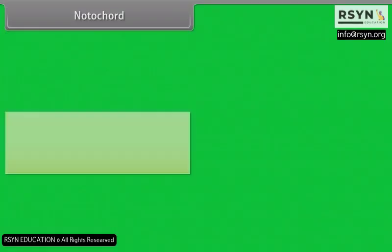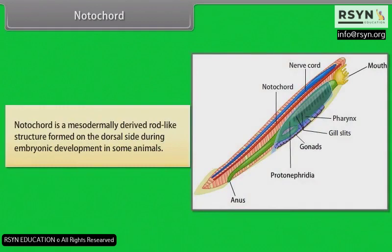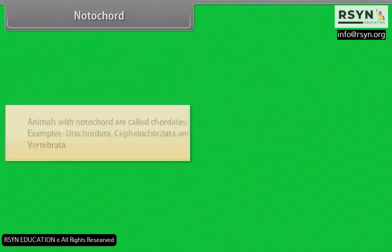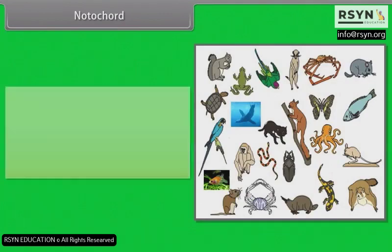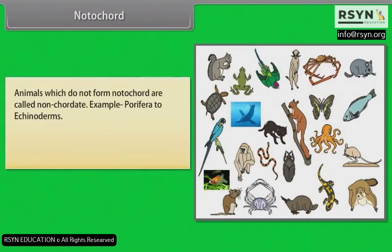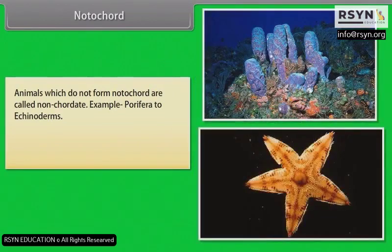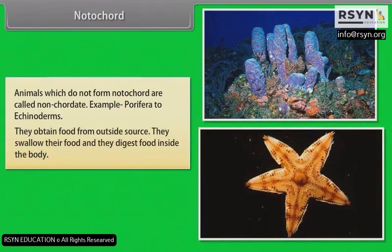Notochord is a mesodermally derived rod-like structure formed on the dorsal side during embryonic development in some animals. Animals with notochord are called chordates. Example: urochordata, cephalochordata and vertebrata. Animals which do not form notochord are called non-chordates. Example: porifera to echinoderms. They obtain food from outside source, swallow their food and digest food inside the body.